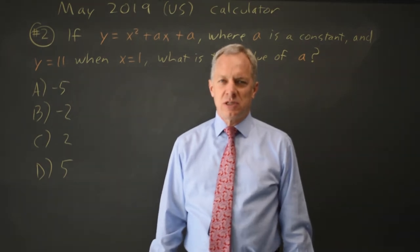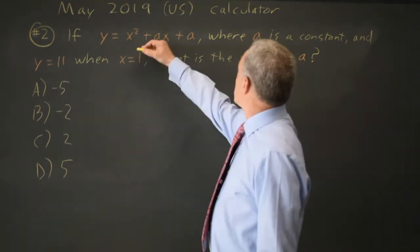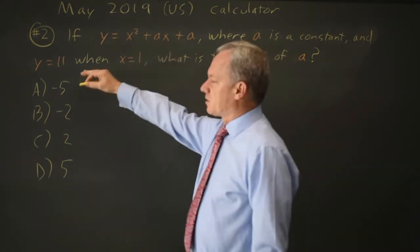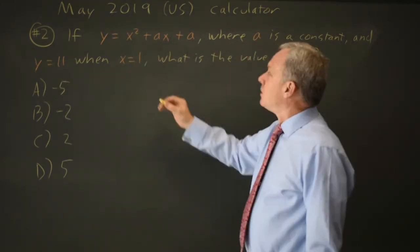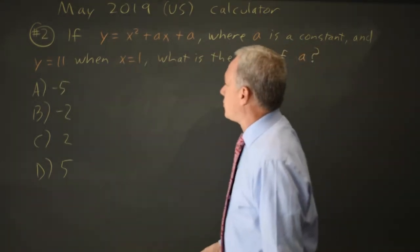This is calculator question number two. College Board gives us a quadratic equation and tells us that y equals 11 when x equals 1, and they ask us to solve for the value of a.